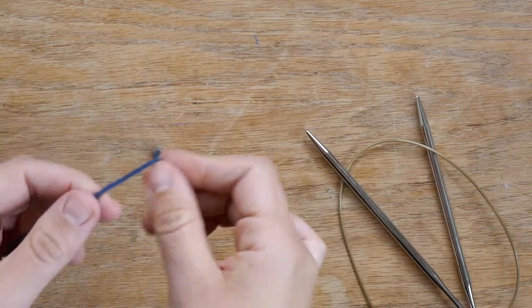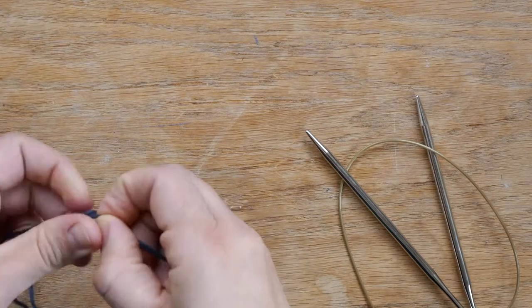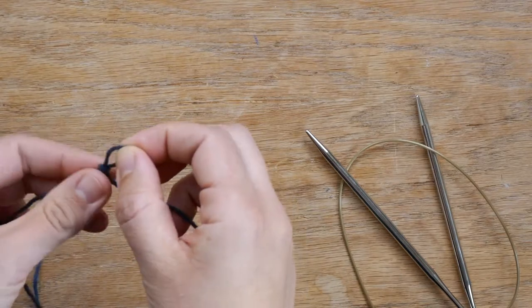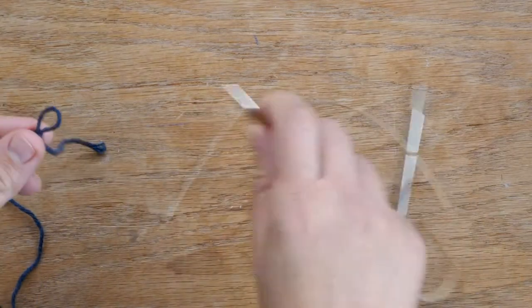So the first thing you need to do is make a slipknot and then stick it on your needle.